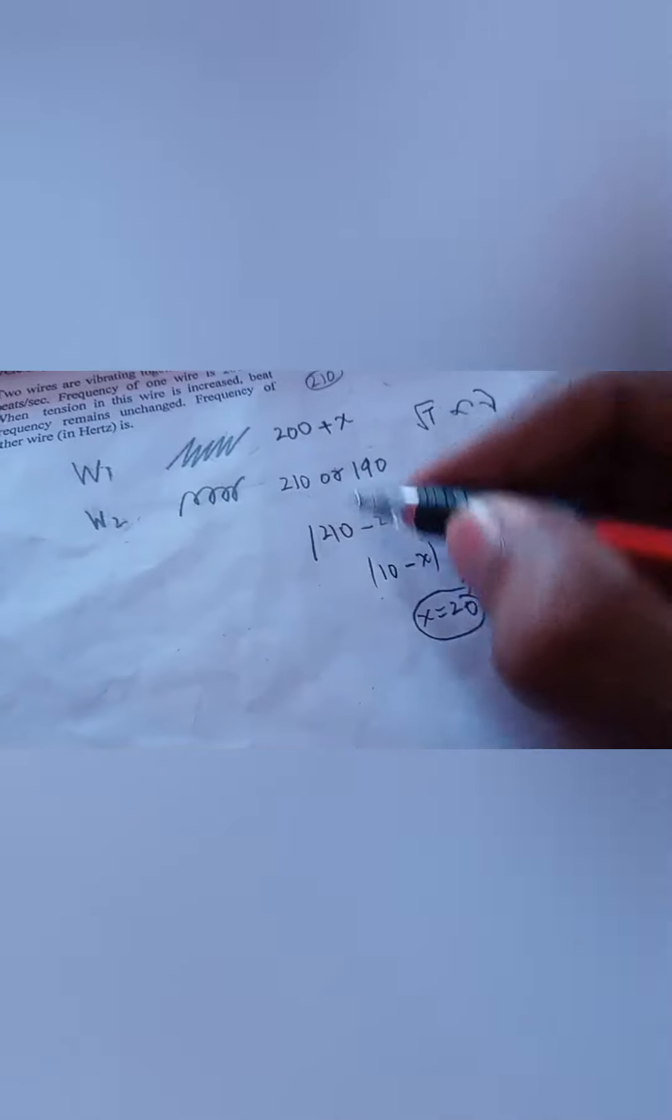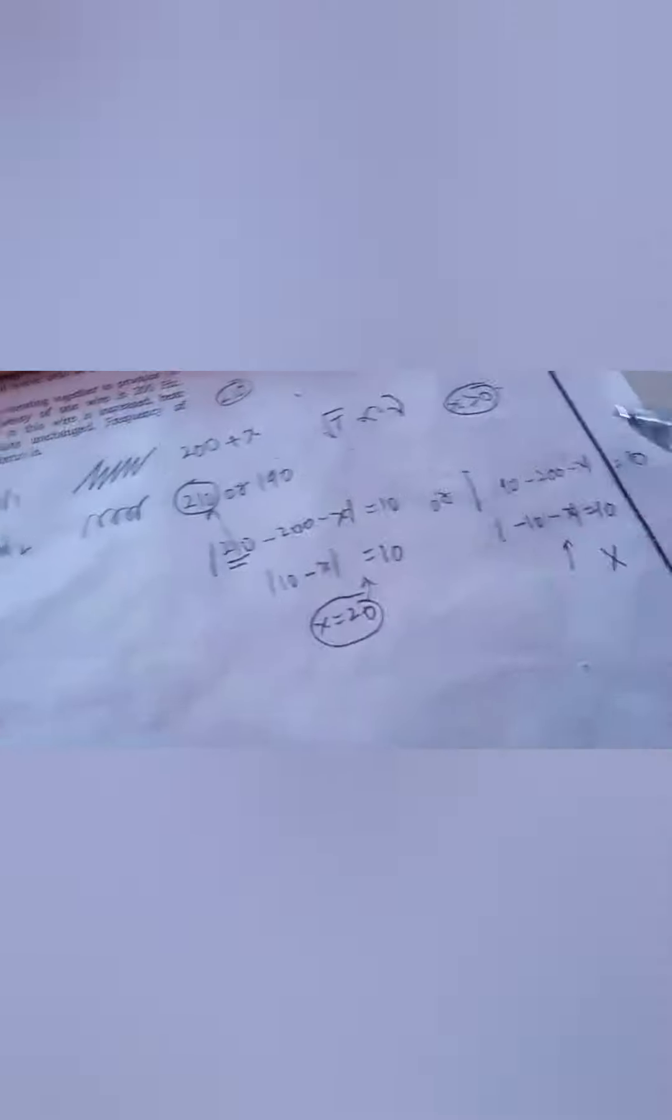So basically, let's see what should be the frequency of the other wire. Other wire means W2. So W2 at frequency of 210 hertz satisfies our answer, whereas 190 is never possible in this case. So that is why our actual answer is 210 hertz.